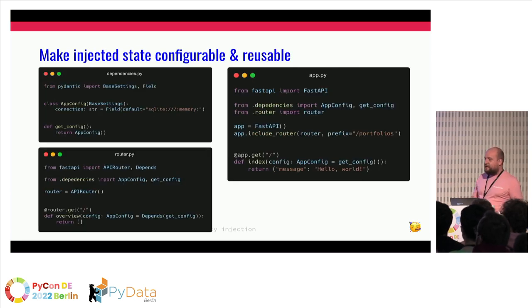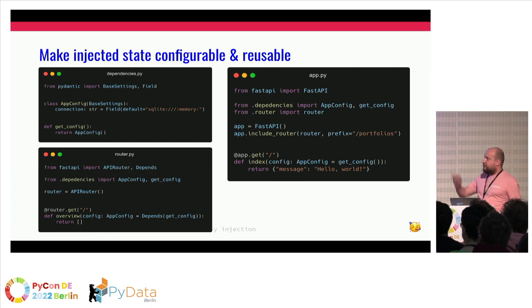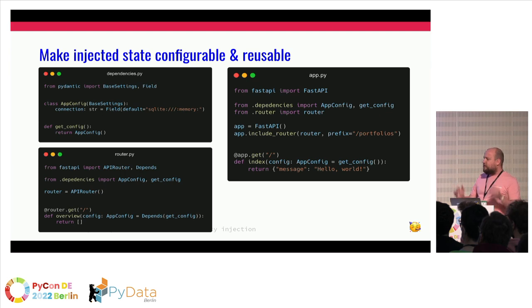But if your application grows, you're not going to put everything in app.py — you're not going to make a Python file of 2000 lines. You want to logically group certain API calls into a router. By using the dependency mechanism of FastAPI, you can easily reuse dependencies in your router. You can put your dependencies and config in a separate file and reuse them in your app or router. Your router stays clean, and you don't have to import global state from somewhere else. Dependency injection will make your life easier when building a large application.